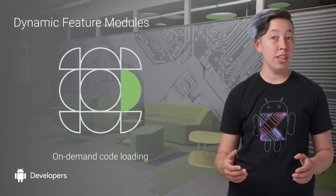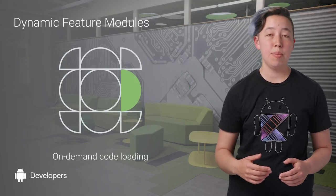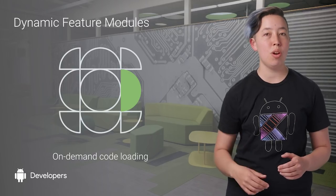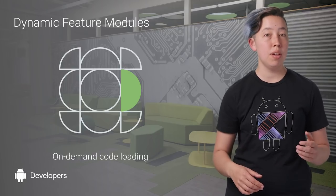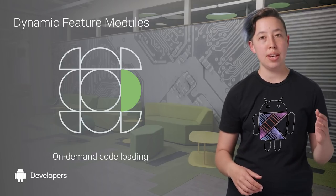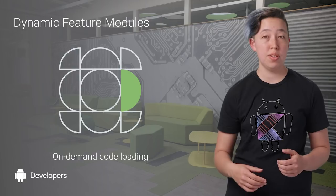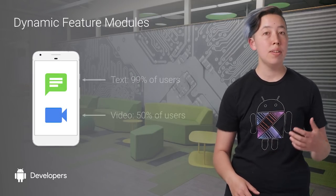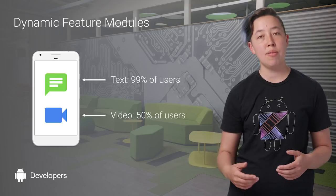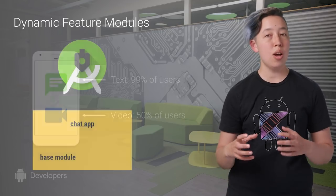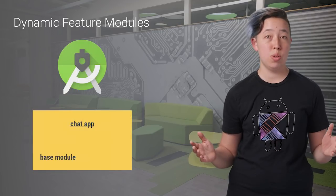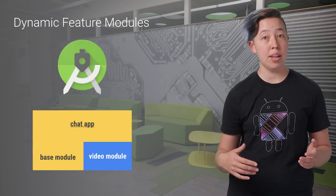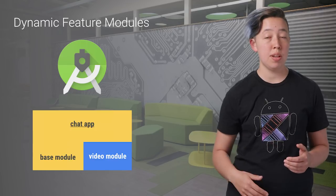Additionally, the App Bundle enables modular apps to download code on demand via a feature called Dynamic Feature Modules, currently released in beta. So let's say that I have a chat app that supports both video and text chatting. If some of my audience never uses video chatting, I could take out all of the code and resources for video chatting and put them in a separate module.